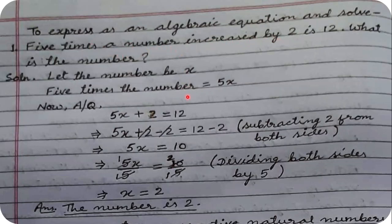Then we frame the equation from that statement. Here one statement is: 'Five times a number increased by 2 is 12.' Read it carefully — five times a number, increased means plus, add 2 to it, and we get equal to 12. So we got the equation.